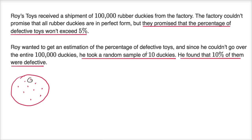First of all, this is clearly a sample study. How do we know that? Well, he is taking a sample from a broader population in order to estimate a parameter. And the parameter is the percentage of those 100,000 duckies that are actually defective.